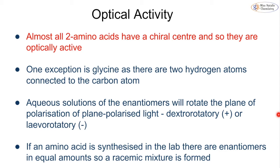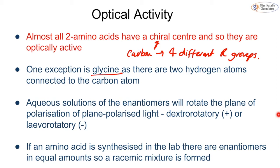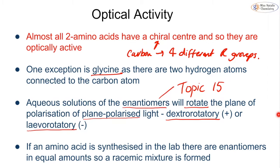The majority of 2-amino acids all have a chiral centre — a chiral centre is when the carbon is connected to four different R groups. The one exception is glycine, because it contains two hydrogen atoms connected to the carbon, so glycine is not chiral. All of the others will be chiral. In aqueous solutions of the enantiomers, if we have equal amounts we get a racemic mixture, but if we have unequal amounts we get rotation of our plane polarised light, giving dextrorotatory or laevorotatory results. With equal amounts we get a racemic mixture and we don't see any rotation.